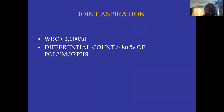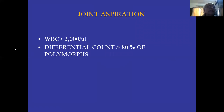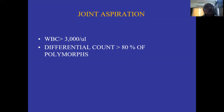For joint aspiration, the cell count should be more than 3000 per year, and differential count — 80% should be polymorphs. This is the workup done by the infection consensus meeting. This is another important thing from the joint aspiration. If it is less than this, you don't have to worry.